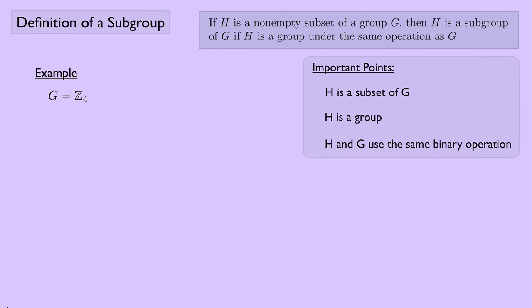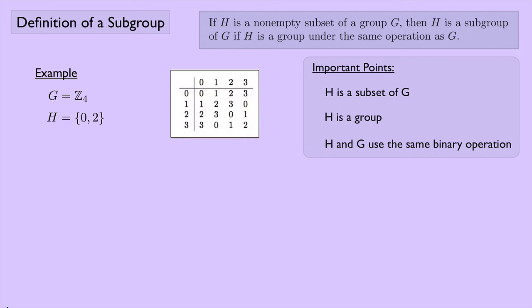Let G be the group Z4, whose binary operation is addition mod 4, and let H be the set {0, 2}. If we write out the group table for Z4 with addition mod 4, we can check whether H is a subgroup. First, H is a non-empty subset of G: {0, 2} is indeed a subset of {0, 1, 2, 3}, so the first condition holds.